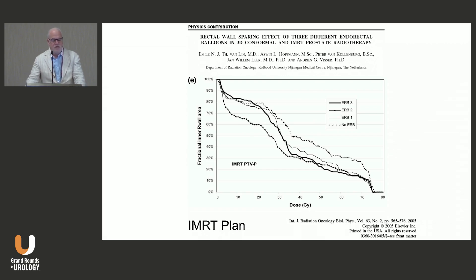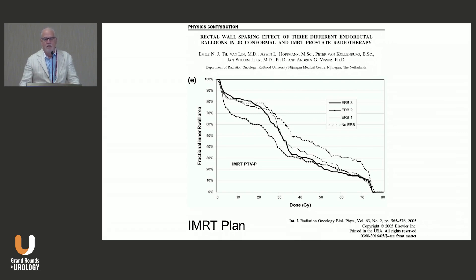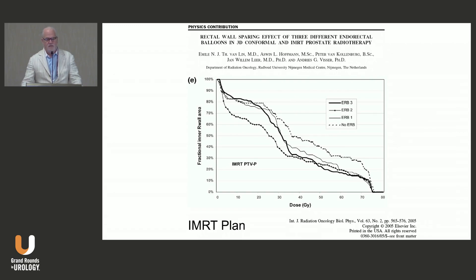This slide from the Red Journal shows that for any given dose on the x-axis, you can draw a line up and see the percentage of the inner rectal wall that's being treated. For the case with no rectal balloon, you have basically the highest amount of rectal tissue covered by the prescription dose. With the various rectal balloons, for any given dose, you're treating a smaller percentage of the rectal wall.